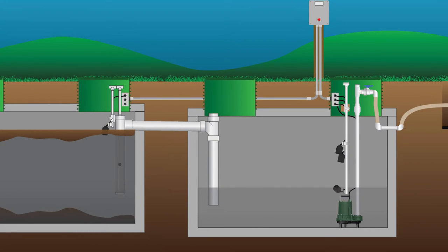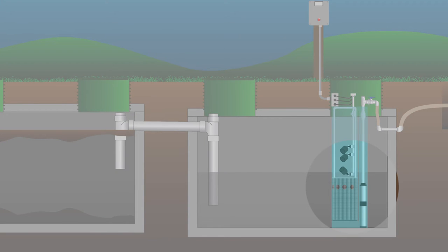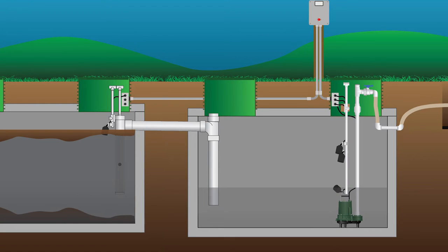That screening requirement can be met in two ways: you can use a bio vault or pump vault that has a screen around the pump or a cartridge that's part of a vault system installed in the dose tank, screening the effluent before it reaches the pump — or you can use an effluent filter in the septic tank, as we've been discussing.